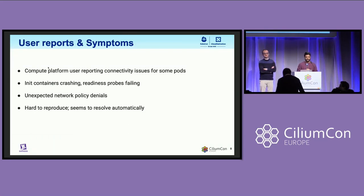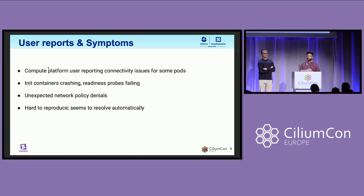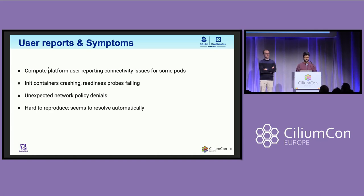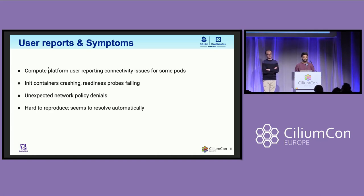Our internal compute platform users were reporting connectivity issues for some pods. The unit containers seemed to be constantly crashing and readiness probes were failing. There were also some unexpected network policy denials. The whole issue was really hard to reproduce because it was constantly being resolved automatically.